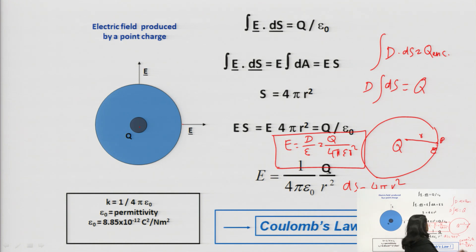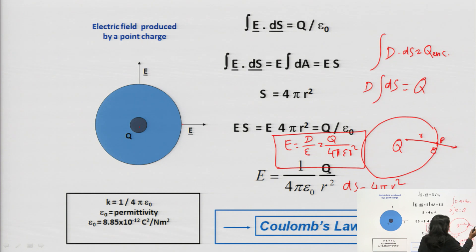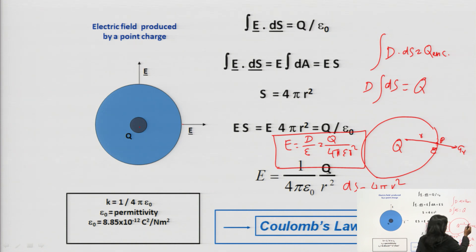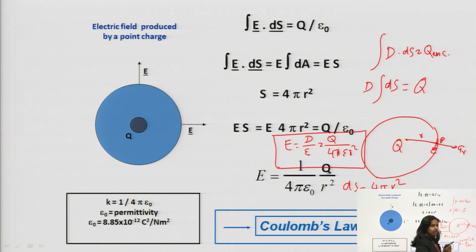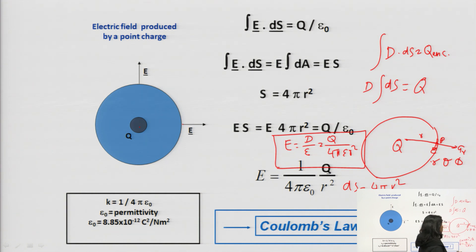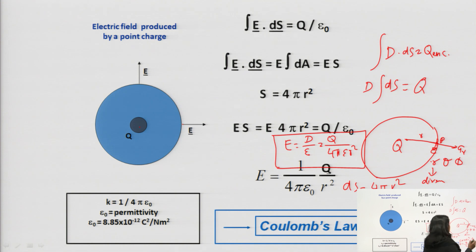I have directly written the value of ds as 4πr² because it was simple — for any sphere the surface area equals 4πr². Alternatively, you can derive ds. In this surface, the direction of the surface area is ar, because the direction of any surface area is the normal vector perpendicular to it. In spherical coordinates, we have three things: r, theta, and phi to represent any vector or point. So r has been used to find the direction, and the rest — theta and phi — will be used to find the magnitude.